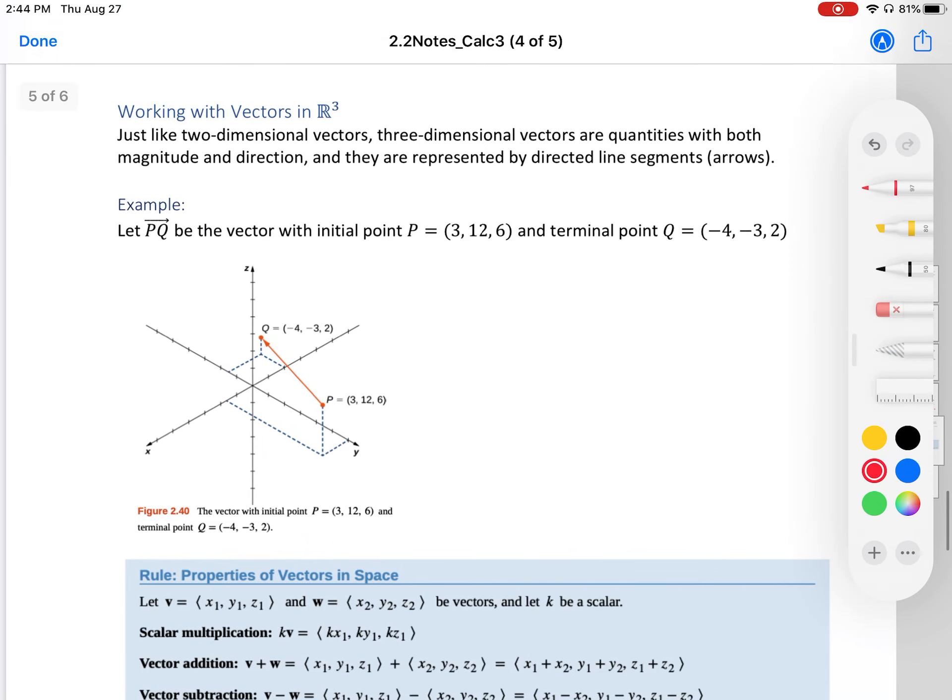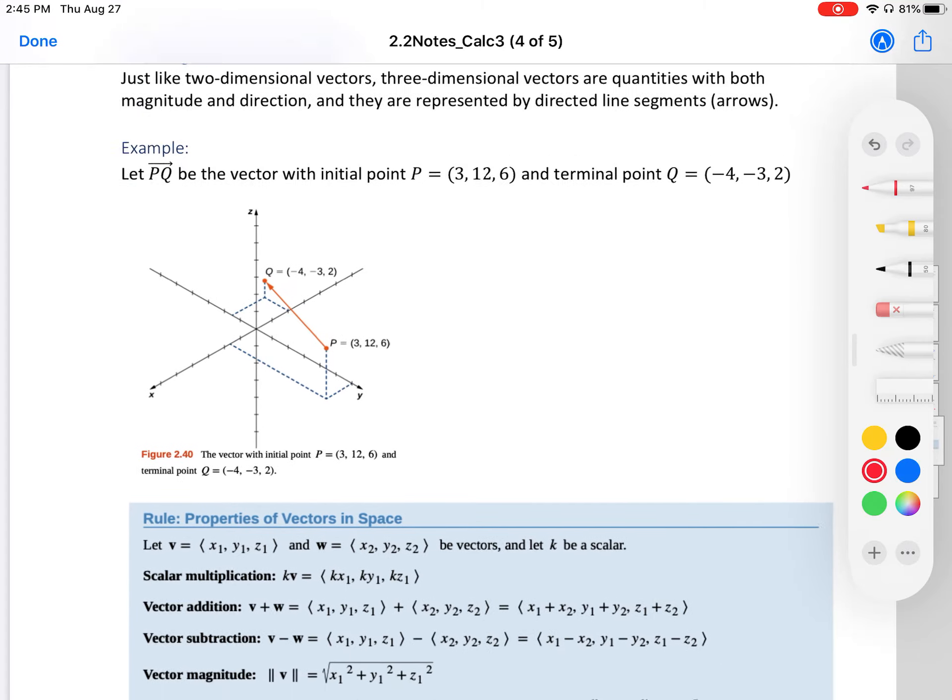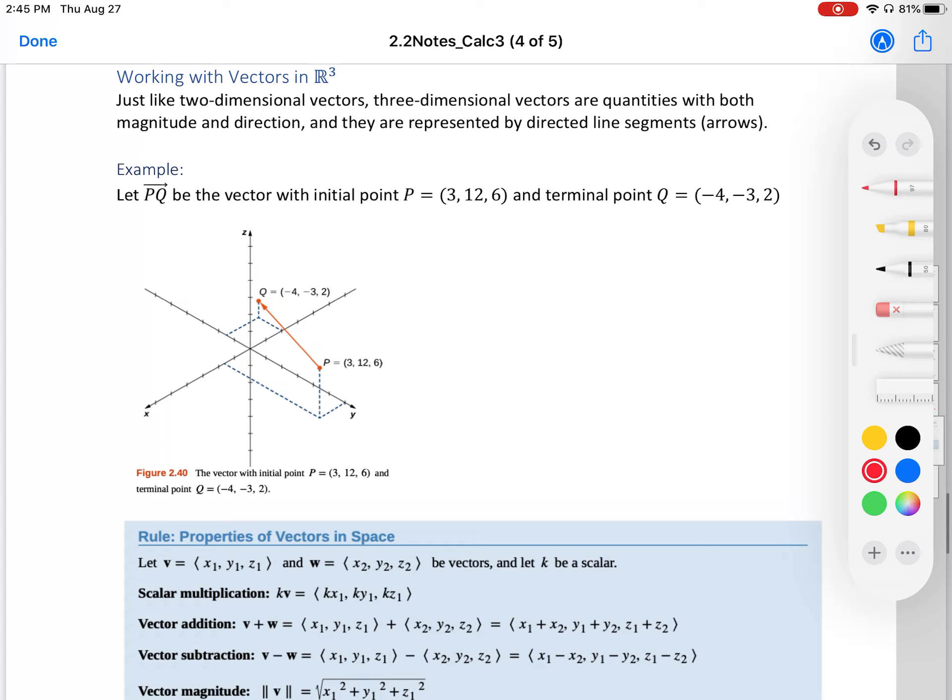Moving forward, working with vectors in R³. Just like two-dimensional vectors, three-dimensional vectors are quantities with both magnitude and direction, and they're represented by directed line segments, or arrows. Here you have an image of a vector. I included the image that you have because it's kind of challenging to draw it without having a perfect grid. Here we see that if we have an initial point at (3, 12, 6) and a terminal point at (-4, -3, 2), if we combine these two points and make a line segment with a beginning and ending point, we have a vector.